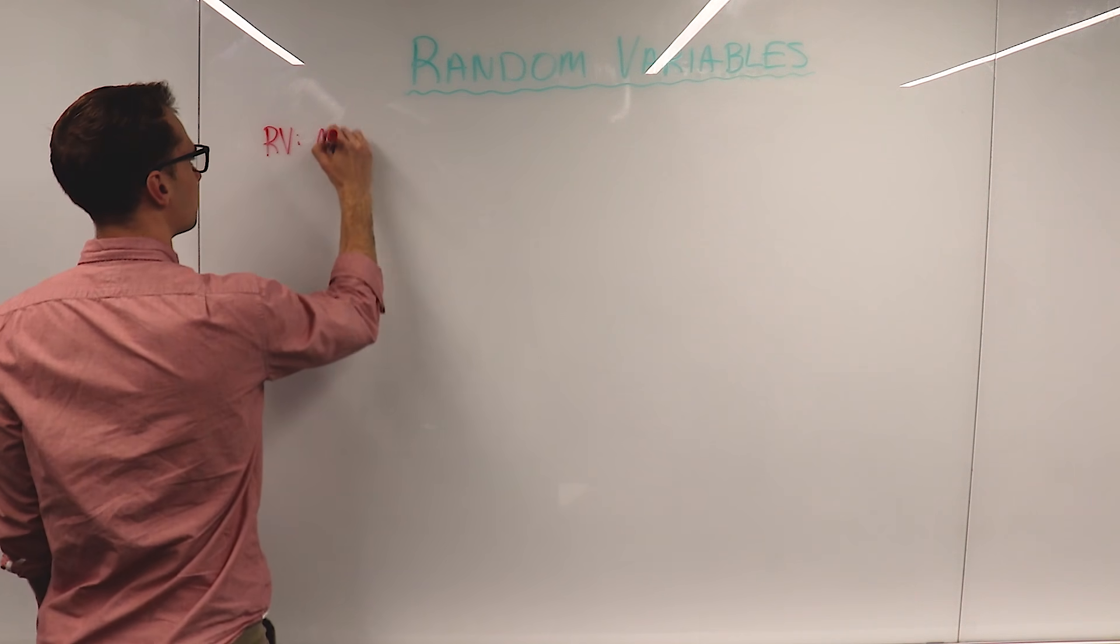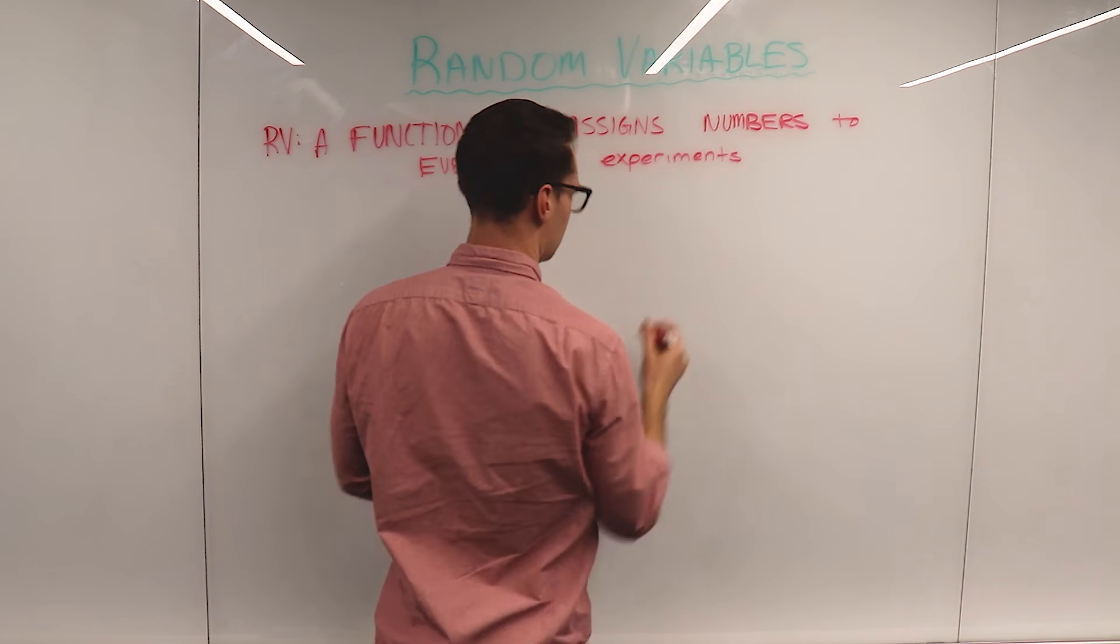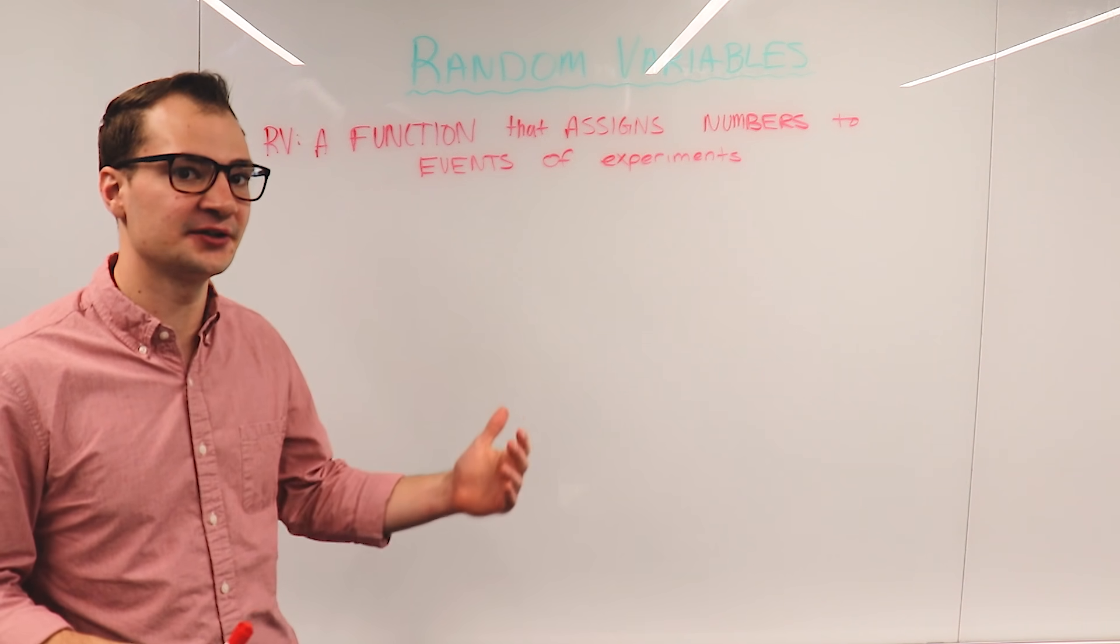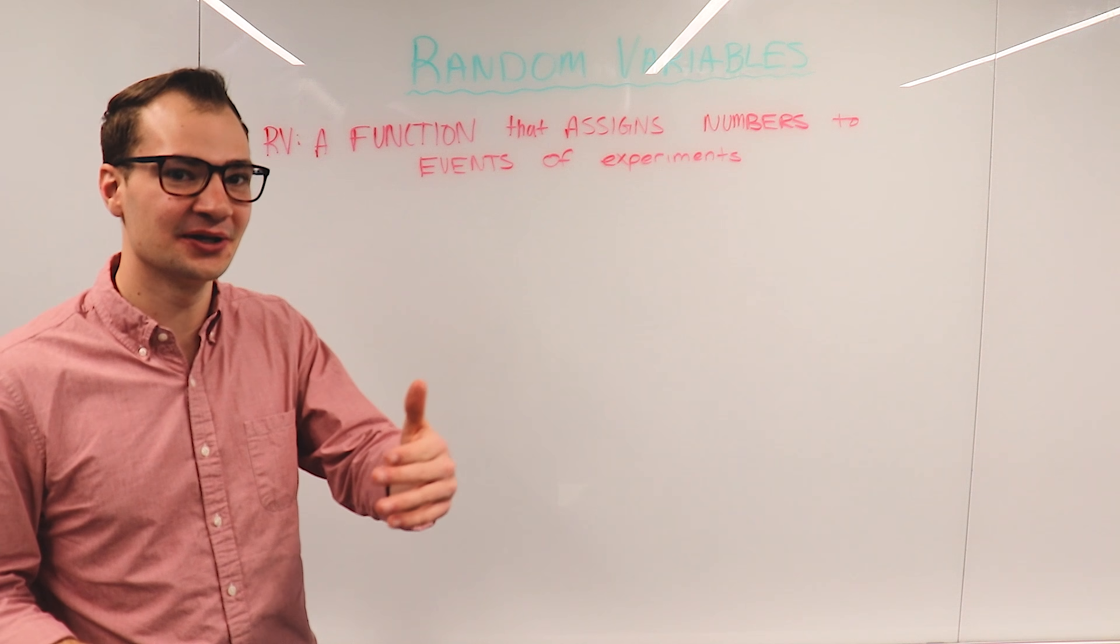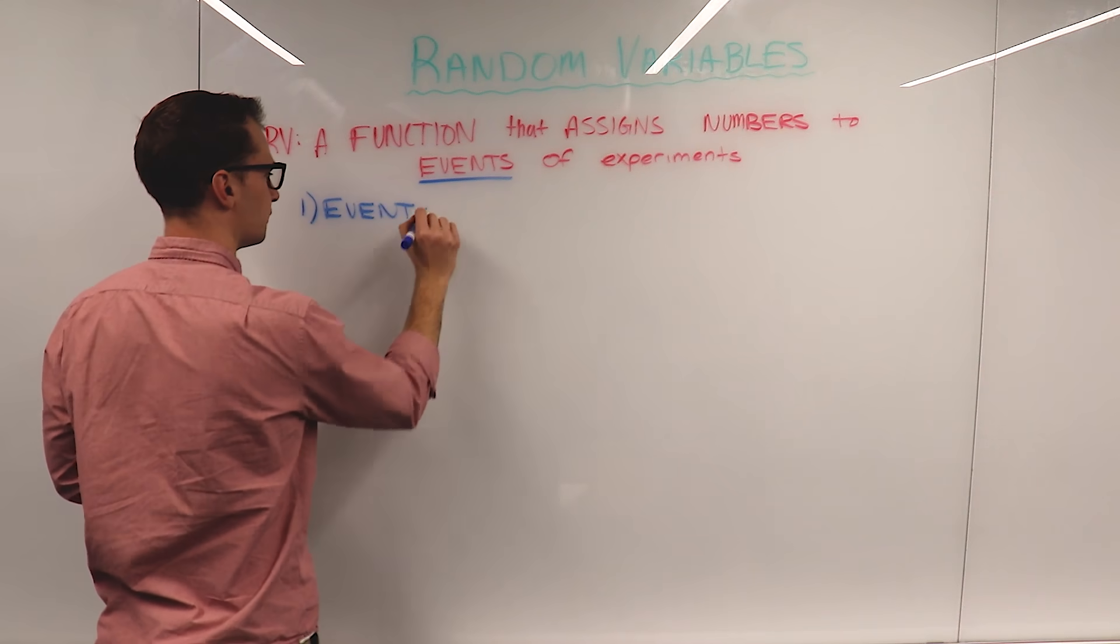We saw some keywords pop up numerous times. Let's cover them. A random variable is really just a function. What do functions do? They assign or map an output to a corresponding input. That's what a random variable is. Let's look at each one of these words and break it down.